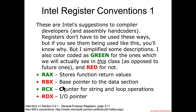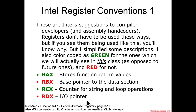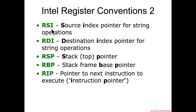RBX is the base pointer to the data section — I have seen this before, but our assembly is going to be so simple that we're not really going to see that. RCX — C for counter — is frequently used for looping operations. RDX we're not going to see used as an IO pointer in this class, but we will in a future architecture class.